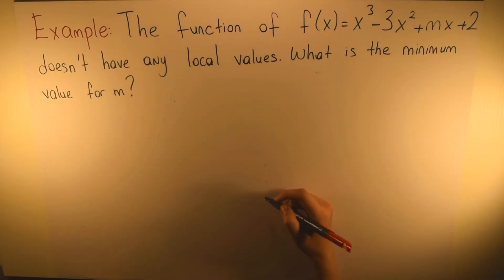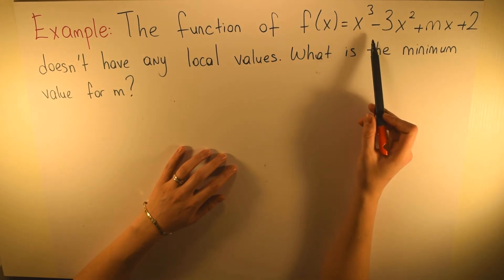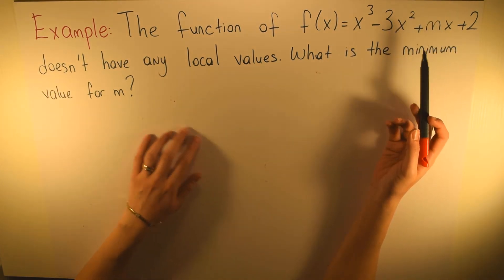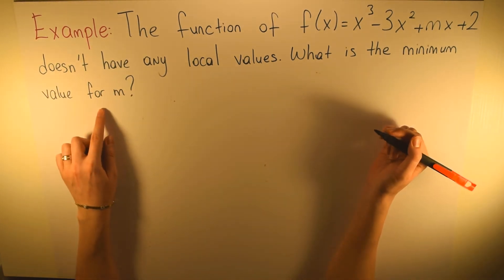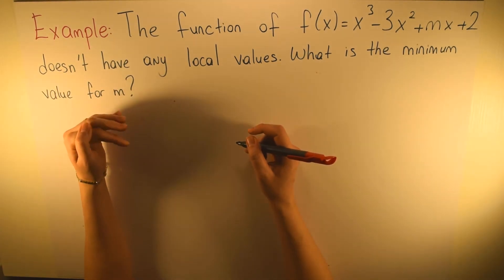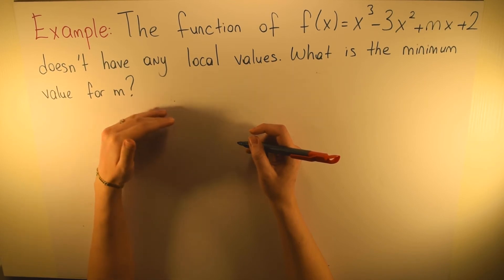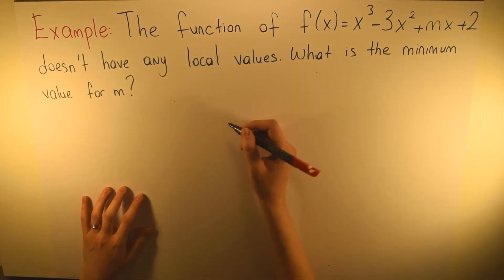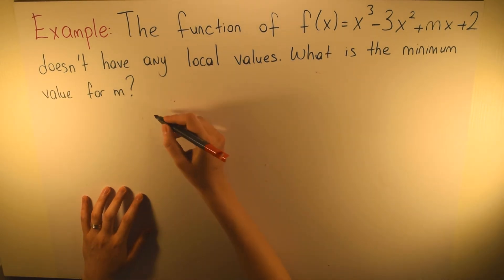Let's look at this example: f(x) = x³ - 3x² + mx + 2 doesn't have any local values. What is the minimum value for m? If this function does not have any local values, it means the first derivative doesn't have any roots or has a double root. We start by taking the first derivative.